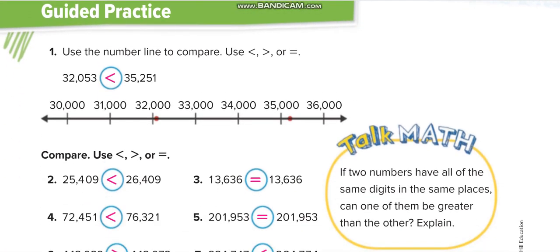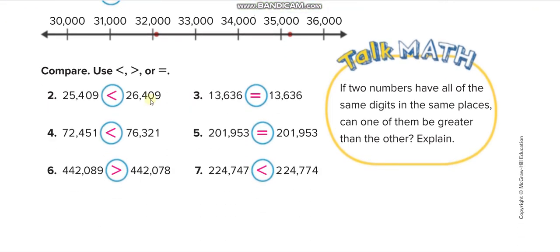Now we compare more numbers quickly. Thirty-two thousand versus thirty-five thousand — thirty-five thousand is greater. Twenty-five versus twenty-six — twenty-six is greater. At the thousands period, six hundred thirty-six and six hundred thirty-six are the same — equal. Then seventy-two versus seventy-six — seventy-six is greater.